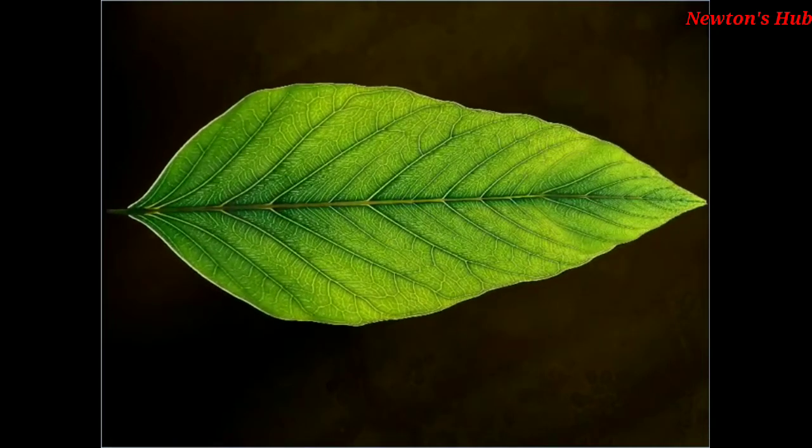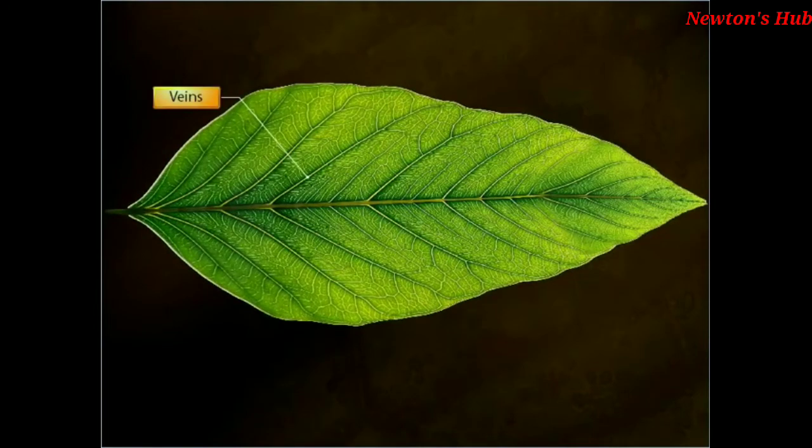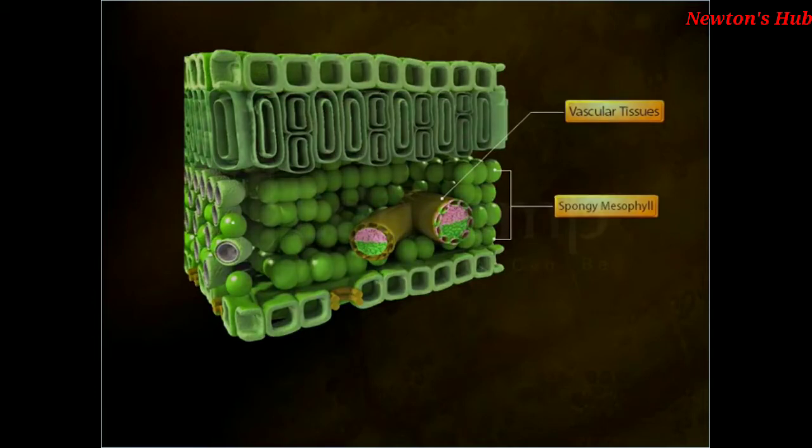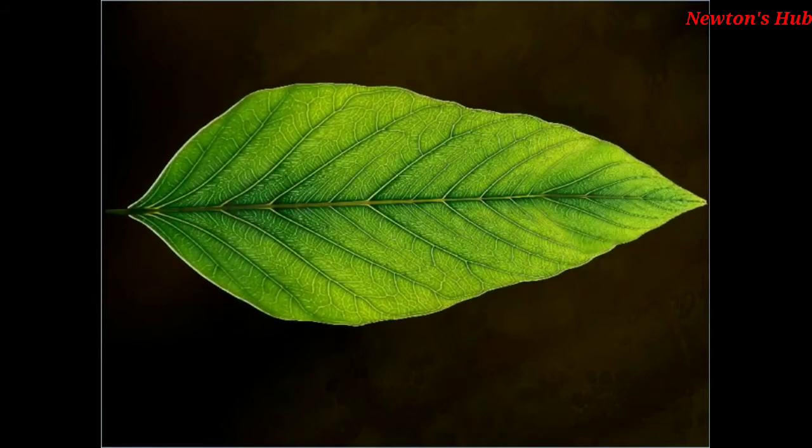Have you noticed those beautiful fine lines on a leaf? They are the veins, which is another important part of the leaf. The veins are the vascular tissues of the leaf located in the spongy mesophyll. These veins are arranged in a specific pattern, a branching network which is called venation.